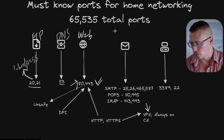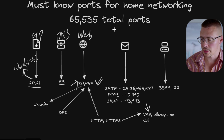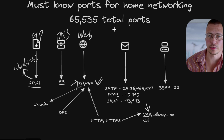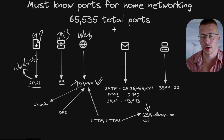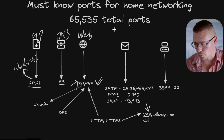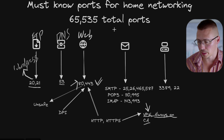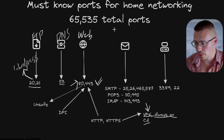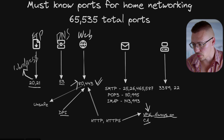HTTP and port 443 are used for things other than just web browsing. For example, VPNs often use port 443. If you use the OpenVPN or WireGuard protocol, you can set it up over different ports depending on the VPN provider, but many offer the option to send all your VPN traffic over port 443 — over HTTPS. There are upsides and downsides to that, but port 443 should generally always be on.